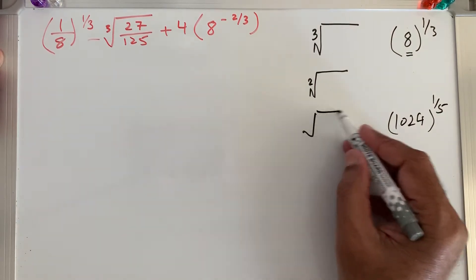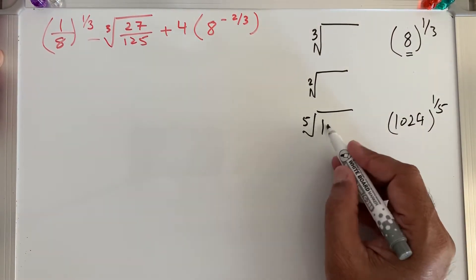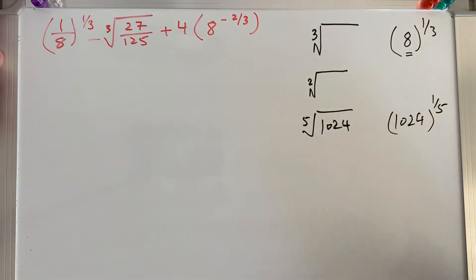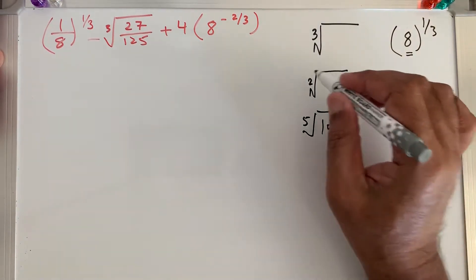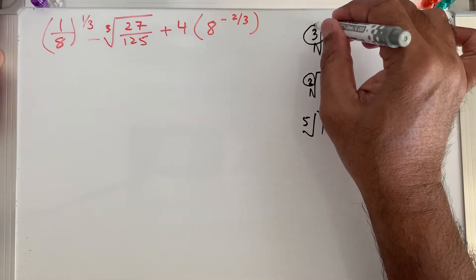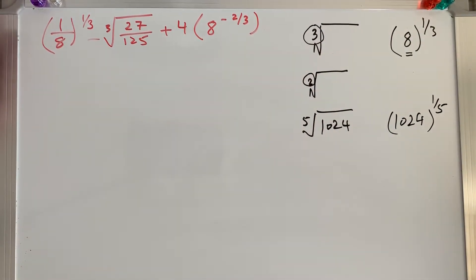1024 to the power 1 over 5 means we want to take the fifth root of 1024. Whenever the power is a fraction, the denominator tells us which root to take — we put that number on the curve of the radical sign. This tells us which root we have to take.